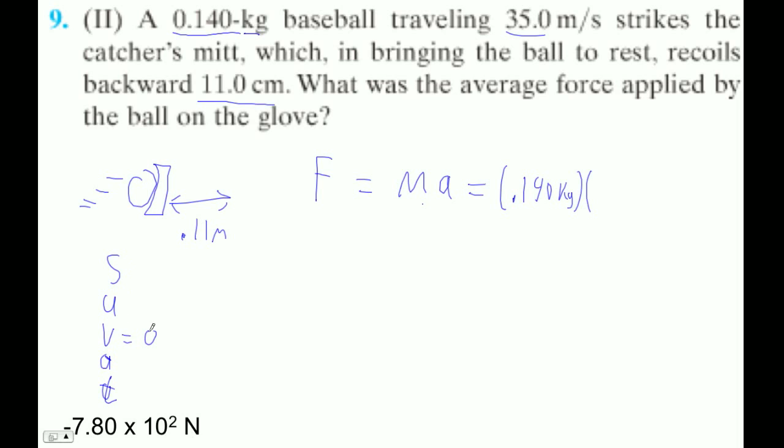The final velocity is 0 because it stops. Brings it to rest. The initial velocity is 35. The displacement is 0.11 meters.